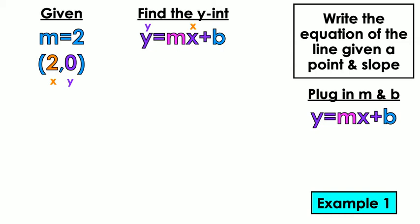Instead of X, I'm going to put a 2. And instead of M, guess what I'm going to put? 2. So I have 0 equals 2 times 2 plus B.